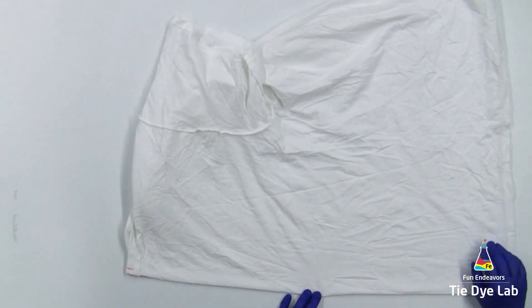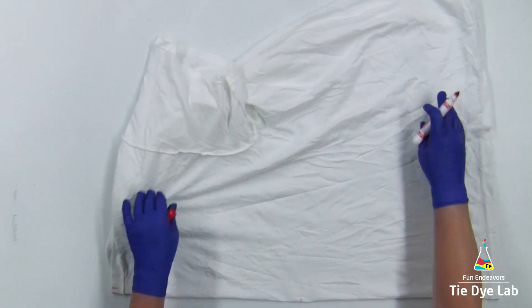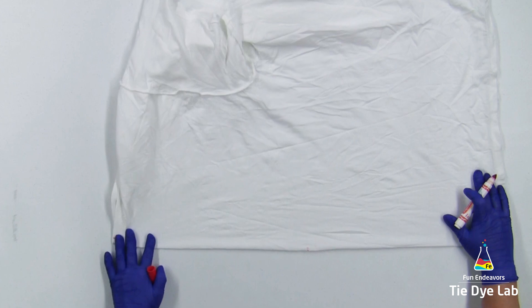Then I folded the bottom hem of the shirt up to the top of the shirt to find where the middle of the shirt is and using a washable marker I placed a mark where the center of the shirt is.